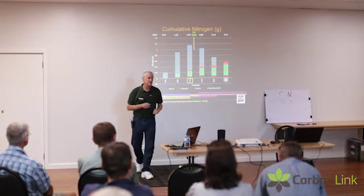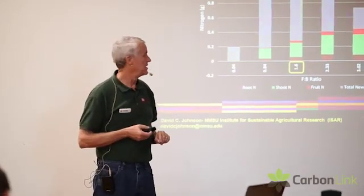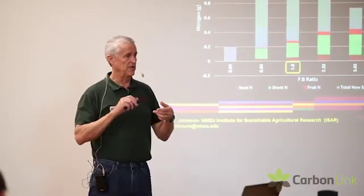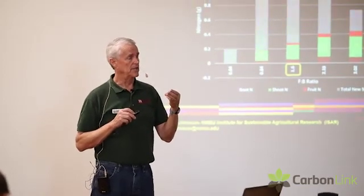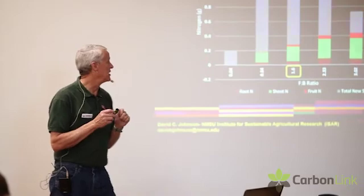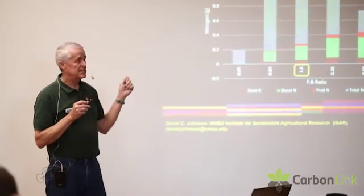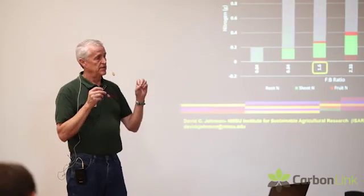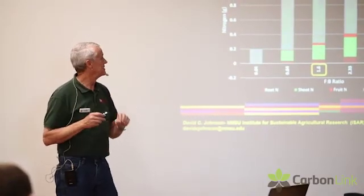Nitrogen fixation is a very energy-intensive process. Nitrogen is one of the few elements on Earth that has a triple chemical bond, which takes a lot of energy to break. It takes approximately 6 to 12 units of carbon to make every unit of nitrogen available to a plant.